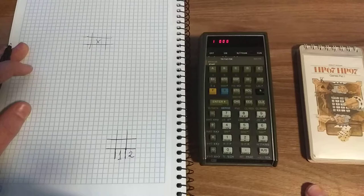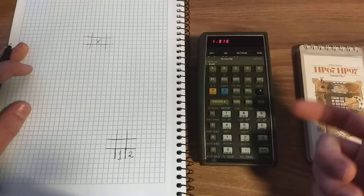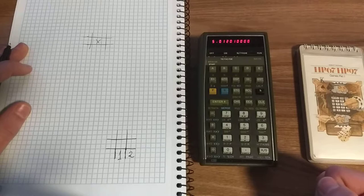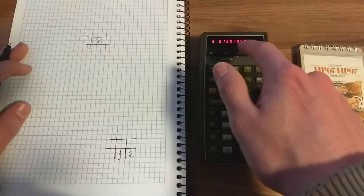I inputted my move, and now the calculator is calculating its next move. The flashing dot indicates it's still processing. The calculator goes to 5.01201. You can ignore the digits after the decimal point and focus on the first digit: five. The calculator selected the fifth position, so this is its move.